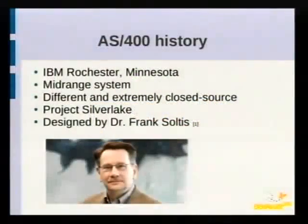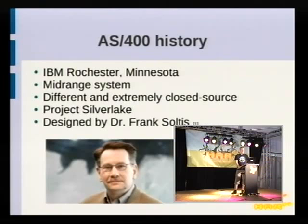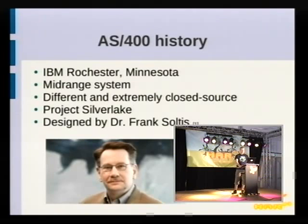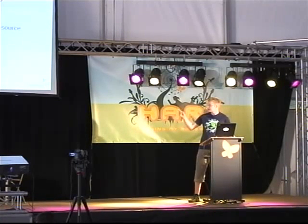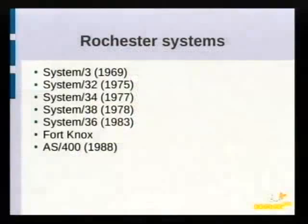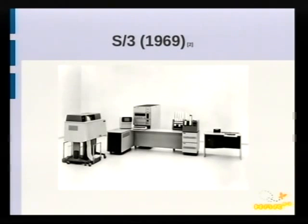A bit of the AS400 history. It was developed by IBM Rochester in Minnesota as a mid-range system, so that means it's actually a small mainframe. It works in a very different way from all the other systems that are around, like Unix, and it is extremely closed source — even within IBM it is really closed. It was developed as part of Project Silver Lake and designed by Dr. Frank Soltis — that's the man on the picture there. Rochester started building systems with the System 3 in 1969, and they built some other systems which I have pictures of.